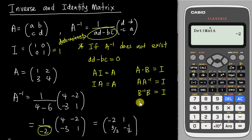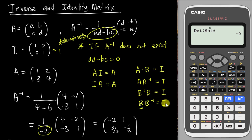So remember: A multiplied by A inverse gives I, and B inverse multiplied by B gives I, and B multiplied by B inverse also gives I. Multiplying a matrix by its own inverse always gives the identity matrix. This concept often comes out in Paper 2.